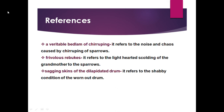Expression six: 'Frivolous rebukes' refers to the lighthearted scoldings of the grandmother to the sparrows. She used to scold the sparrows very light-heartedly — bahut halke man se — not being very rude, but softly. Expression seven: 'Sagging skins of the dilapidated drum.' Sagging means loosely held. It refers to the shabby, worn-out condition of the old drum — drum ki jo skin thi, it was loosely held, it was old and worn out.